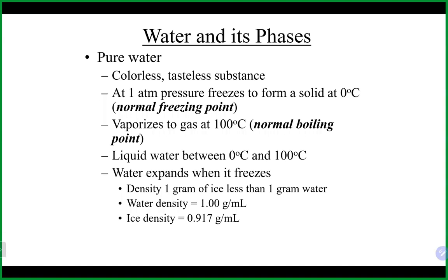Water is an unusual substance. Most substances in their solid state are usually more dense than in their liquid state, but it's the opposite for water. Ice is actually less dense than liquid water — that's why it floats to the surface. The density of liquid water, for most purposes, is one gram per milliliter. Density does change with temperature, but one gram per milliliter is usually the value used.